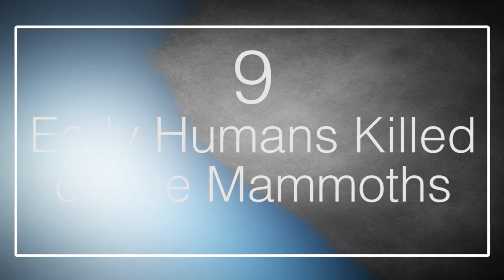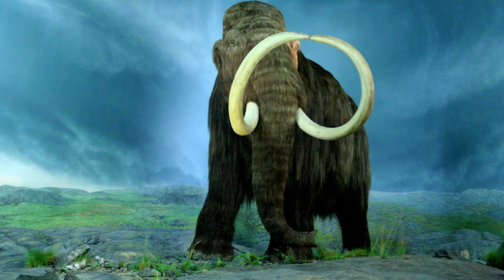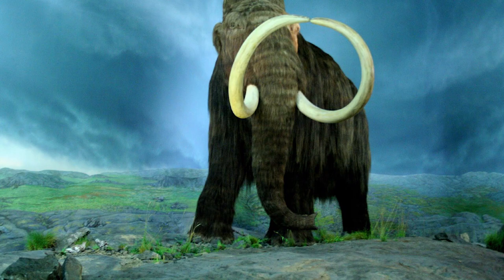Number 9: Early Humans Killed Off The Mammoths. Mammoths were one of evolution's success stories. Their remains have been found in every continent except South America and Australia. They walked the Earth for six million years before finally going the same way as 99.9% of all other species that have ever existed.